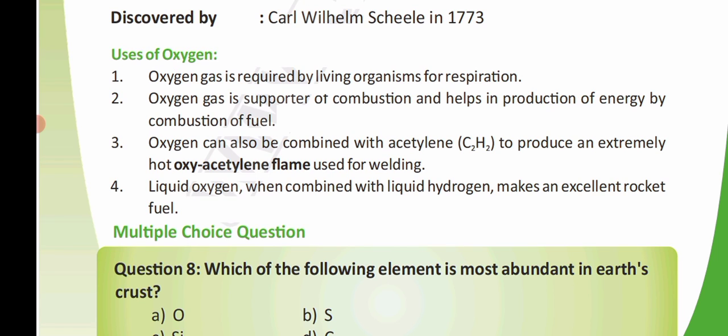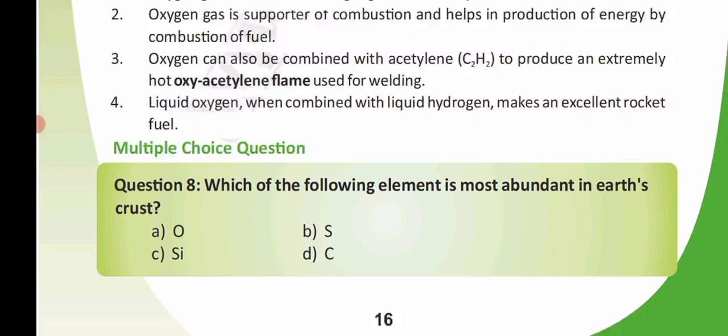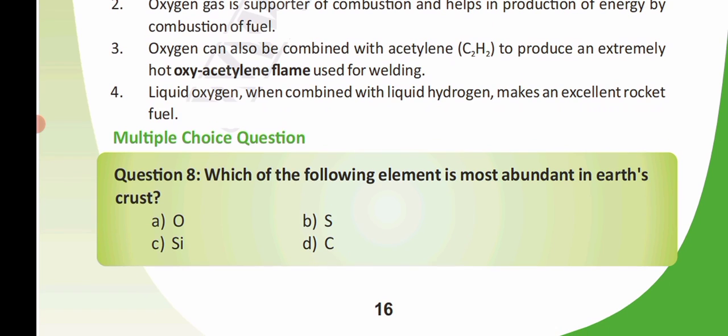I have a multiple choice question: which of the following elements is most abundant in the Earth's crust? Option A: oxygen, Option B: sulfur, Option C: silicon, Option D: carbon. Give the answer in the comment section. Thanks for watching this video.